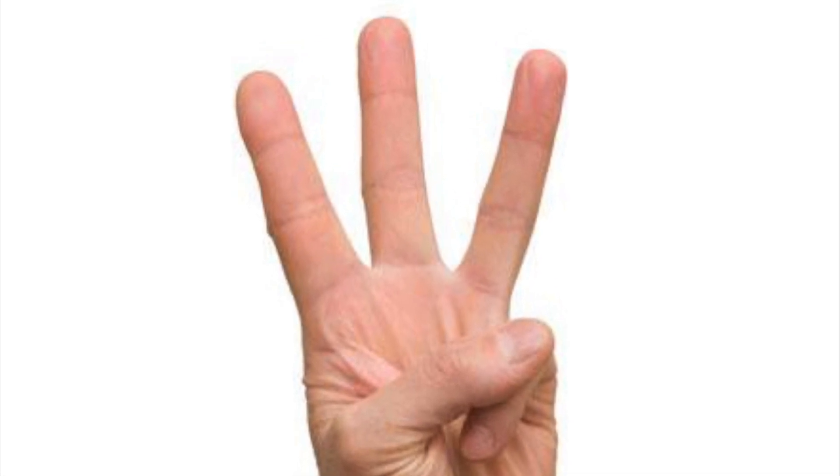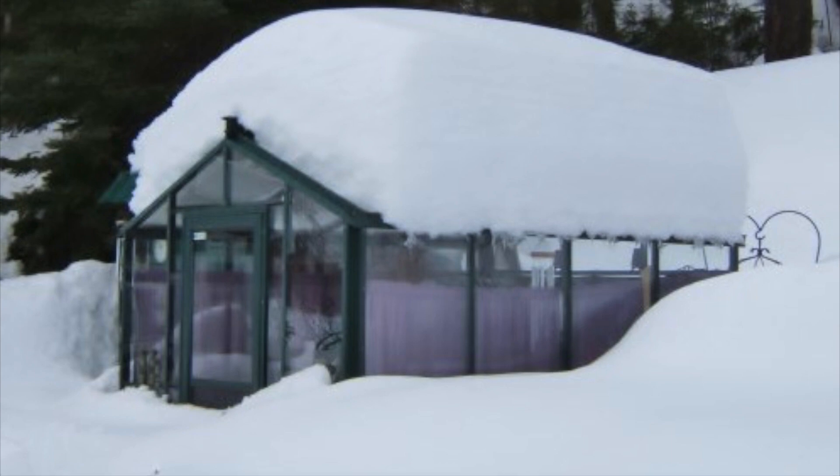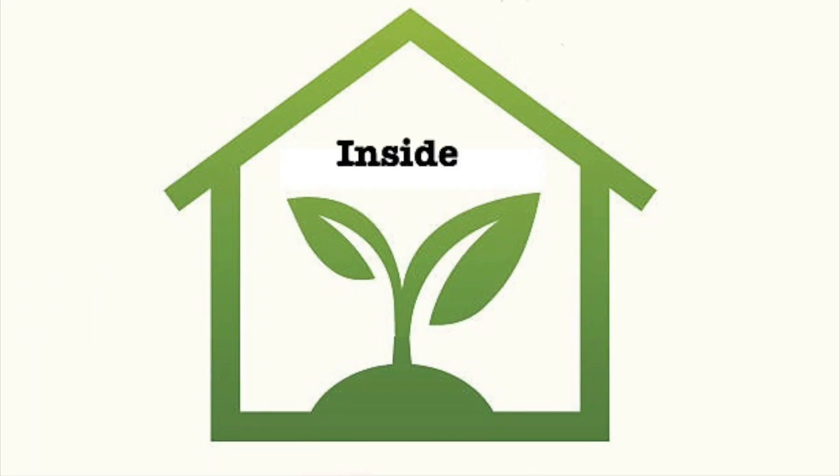There are three things to consider with insulation when constructing an economical insulated solar greenhouse for deep winter use: outside, inside, and the floor.